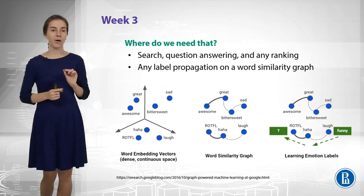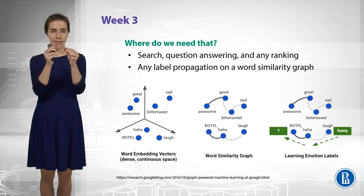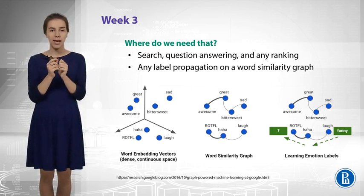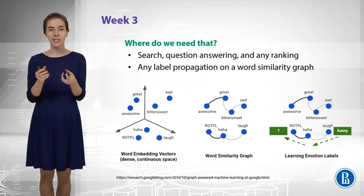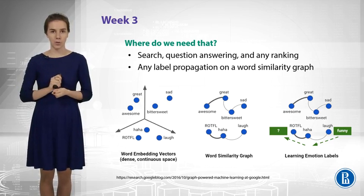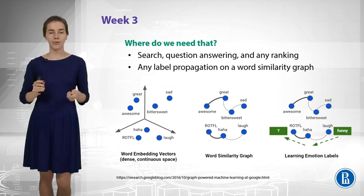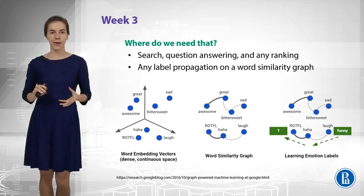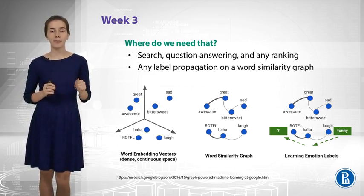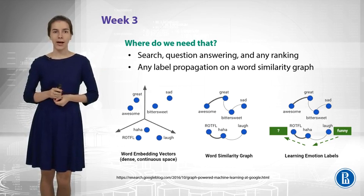Let's say we represent our words by three-dimensional vectors, depicted here in this space. Once we know the similarity — the distance between those points — we can create a similarity graph for words. In this graph, the nodes are words and the edges carry the similarities between the nodes. This graph is actually very useful: when you have labels for some nodes, for example if you know that 'love' has the label 'funny', you can propagate these labels through the graph so that similar words get the same labels. For example, the word 'ha-ha' will also get the label 'funny' because it is similar to the word 'love'. We will cover this in week 3.